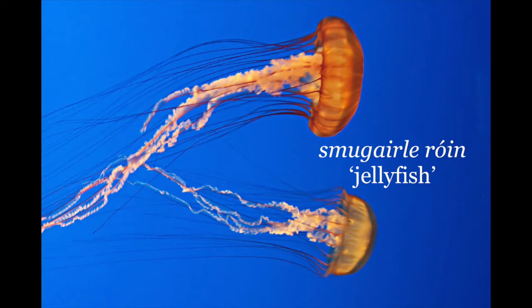A creature which out of water resembles a shapeless mass of colourless goo is known by a name which has been translated into English as seal snot. In the long history of Irish language, the term smugairle rón is a relative newcomer.